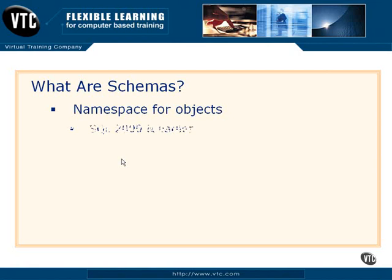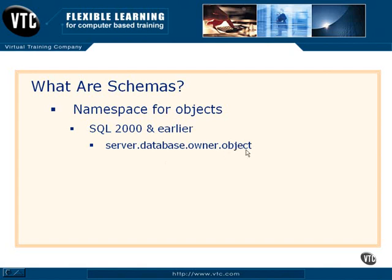In previous versions, if you were here before SQL 2005, we could refer to any object when we wrote Transact SQL queries. We could say, for example, select everything from the authors table. But if we wanted to connect to the authors table on a different server or in a different database, we could use four-part naming: select everything from server.database.owner.object. As it turns out, owner was actually a namespace, because all objects were collected and maintained by SQL Server based on who owned them.